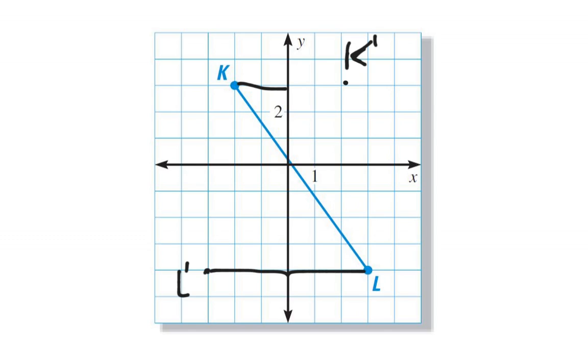And that means the image of K prime L prime is going to look something like this. Notice that in this particular circumstance, there is a point on my line that is going to be the image and pre-image point on the line segment are the exact same point. And that's okay, and that happens sometimes.